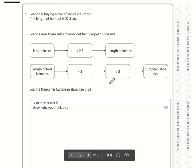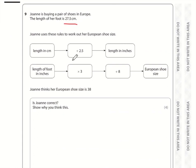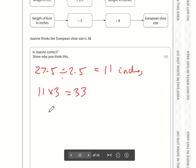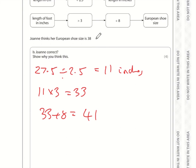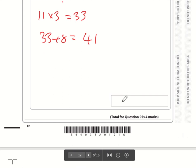Question number nine. Joanne's foot length is 27.5. Let's convert that into European. The length in centimeters divided by 2.5 turns it into inches. That is 11 inches. To convert inches into European, we do 11 times by 3, which is 33, and then 33 plus 8, which is 41. Joanne thinks a European shoe size is 38. Is Joanne correct? No, she is size 41.